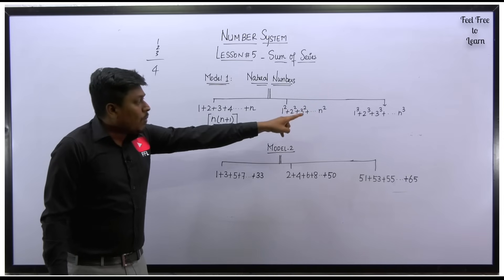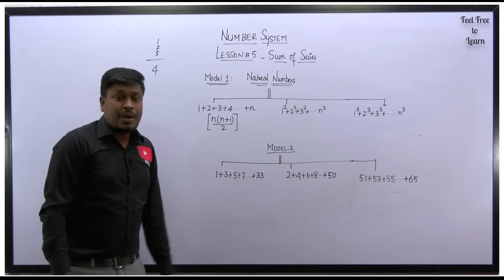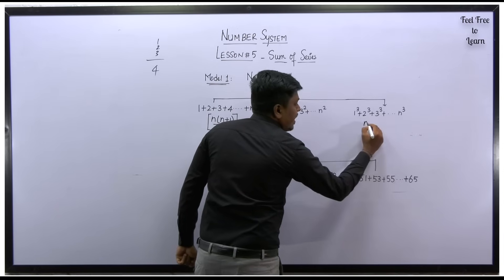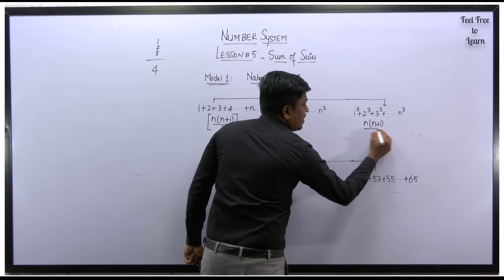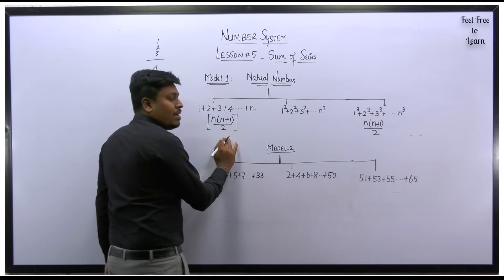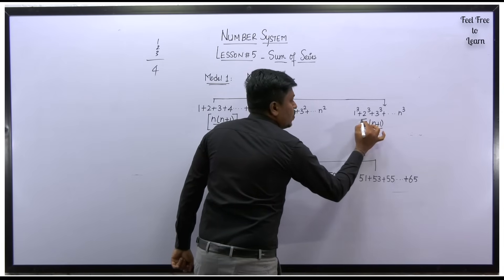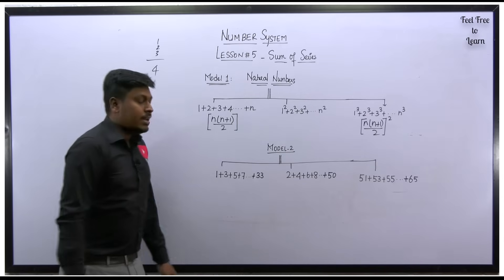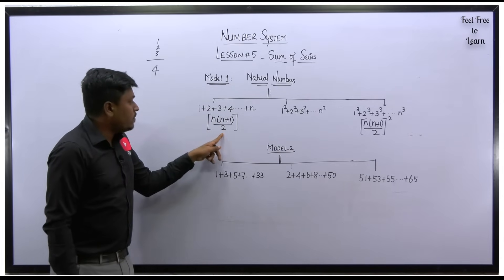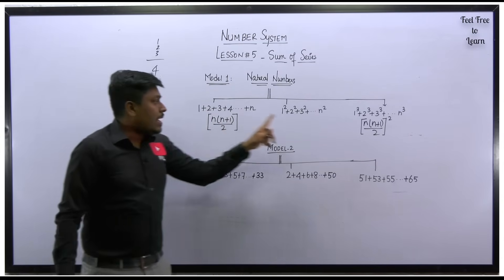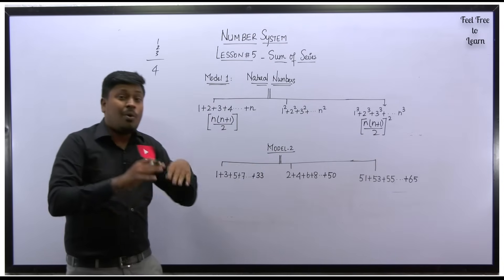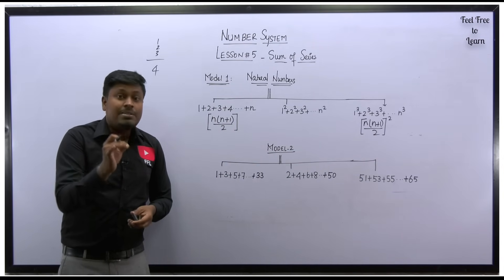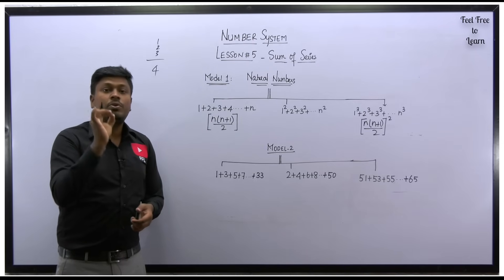This formula and the last formula will also be the same. For 1 cube, 2 cube, 3 cube up to n cube, the formula is again n into n plus 1 divided by 2 — but the only difference is you have to square the entire result. So n into n plus 1 by 2, the whole square, is for natural numbers cubed.